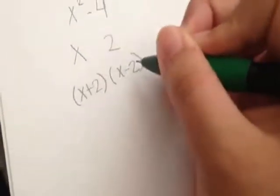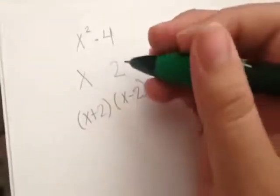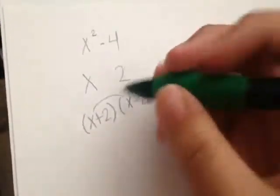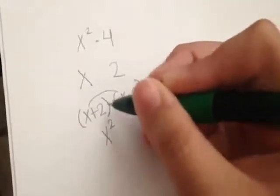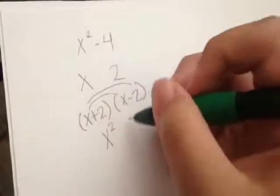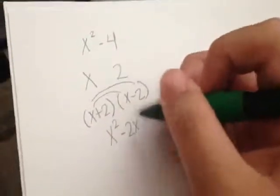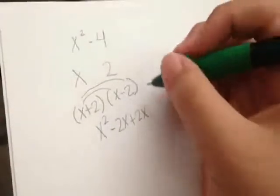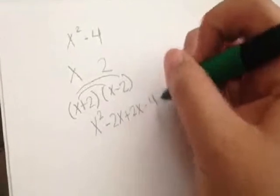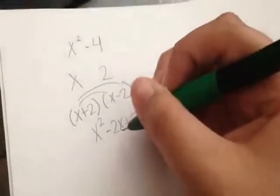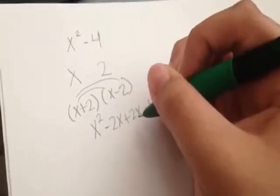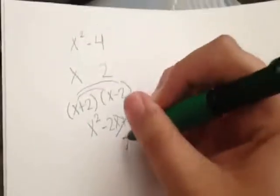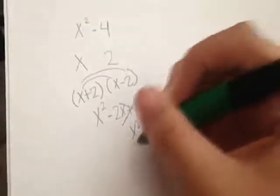2 times negative 2 gives me negative 4, which would work. Now let me distribute. So x times x would be x squared, and x times negative 2 would give me negative 2x, and 2 times x would be positive 2x, and 2 times negative 2 would give me negative 4. Since negative 2x and positive 2x are opposites, they cancel out, which leaves me with x squared minus 4.